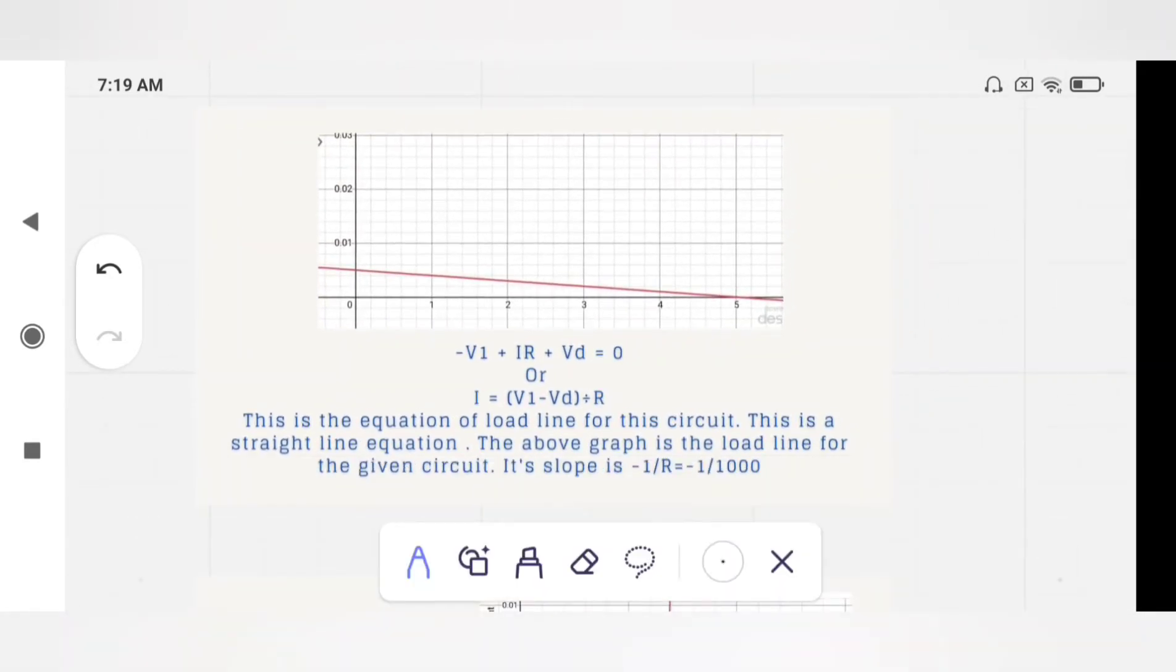We have plotted this equation on a graph. Its slope is minus one upon R1 or minus one upon thousand. It is a straight line equation. Its intercepts are here, this is V1 and this is here. If you change the value of R1, the line of the slope will change.